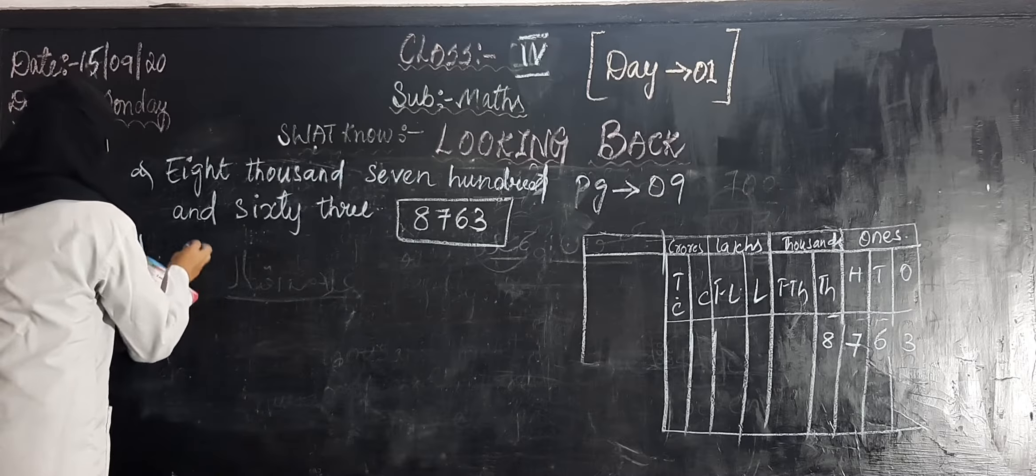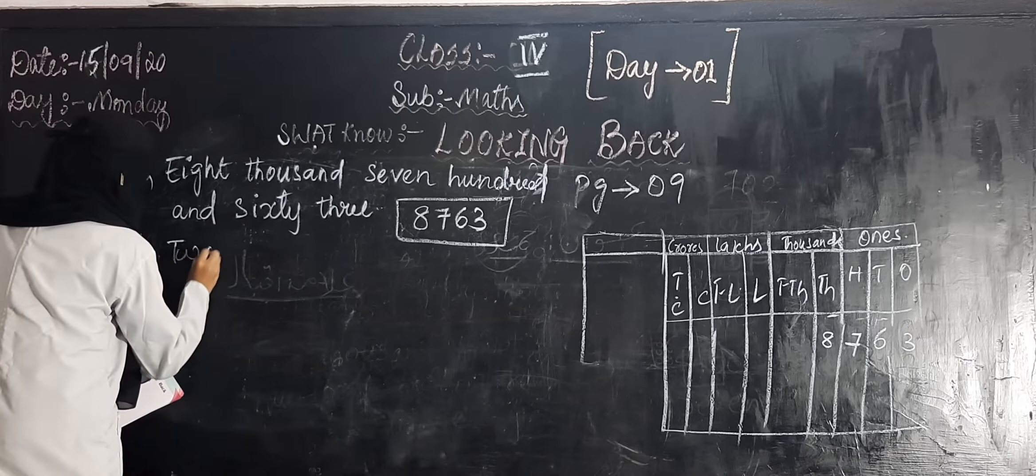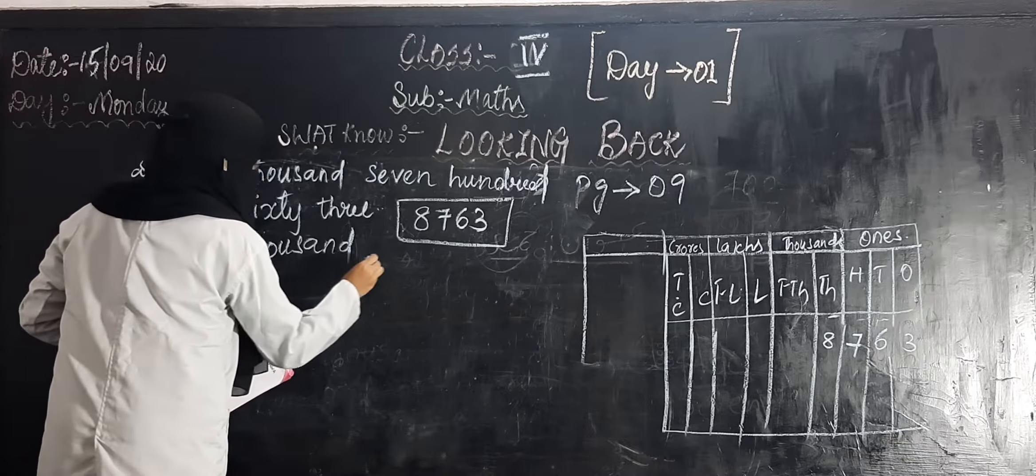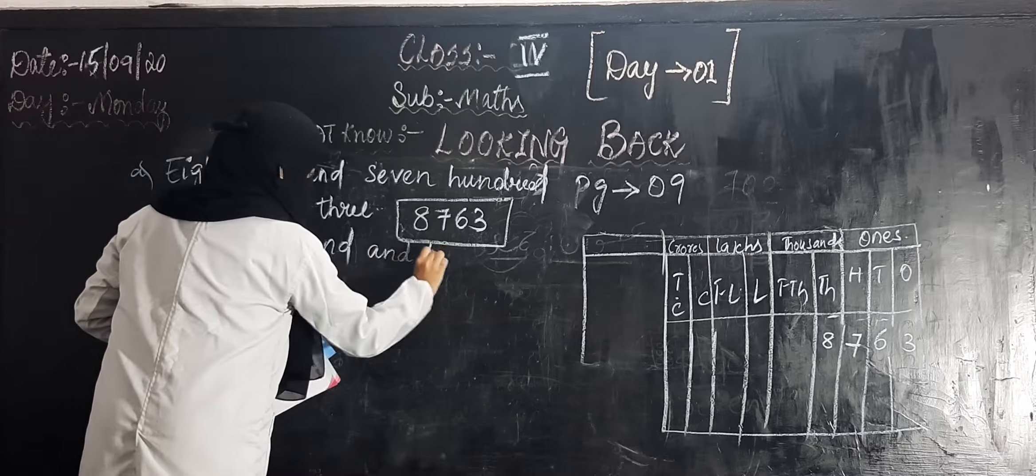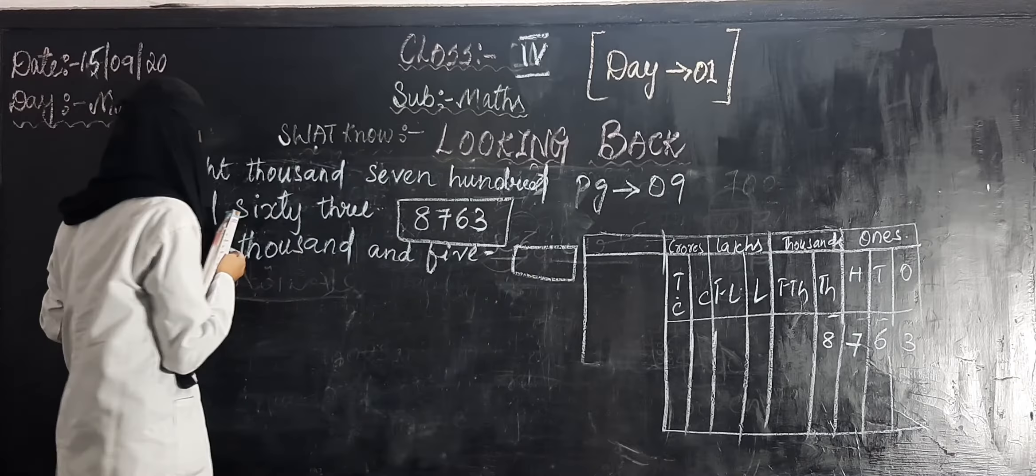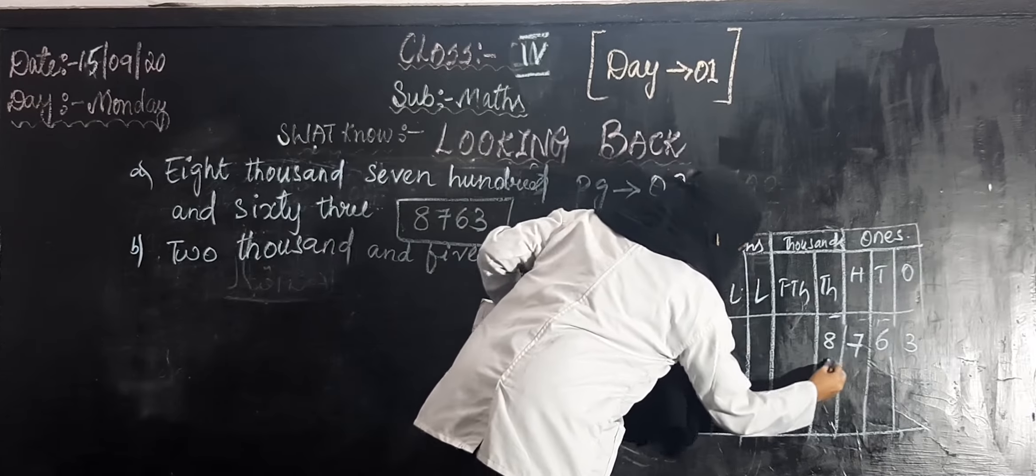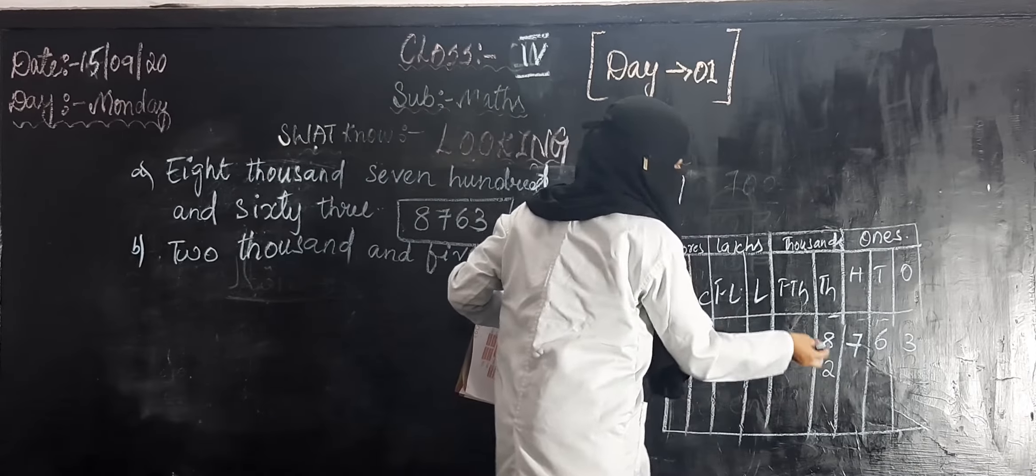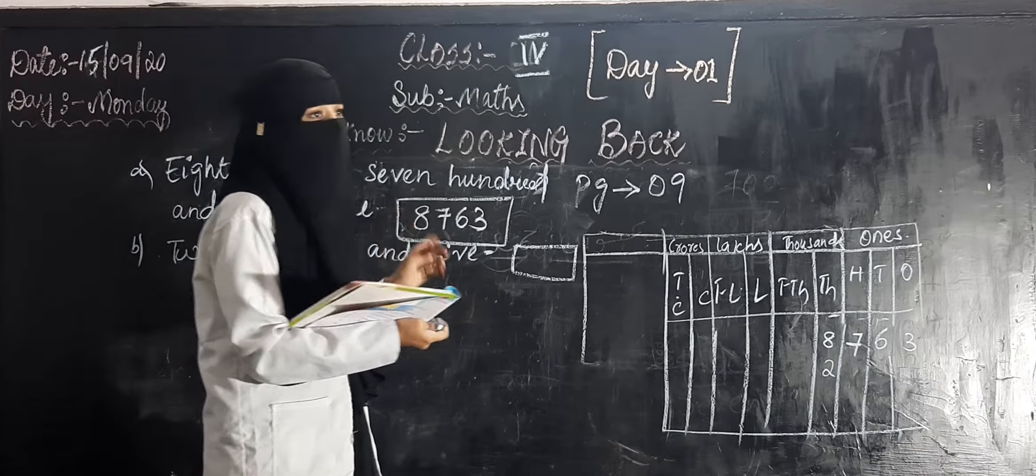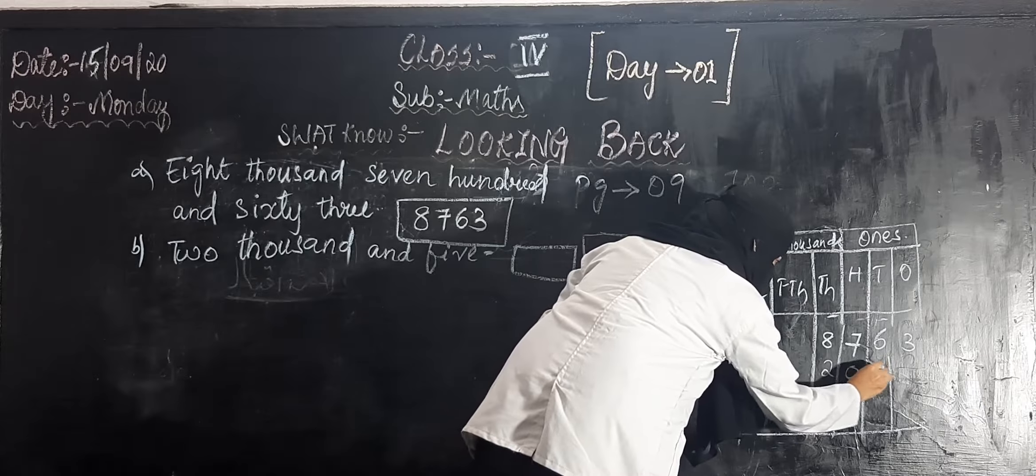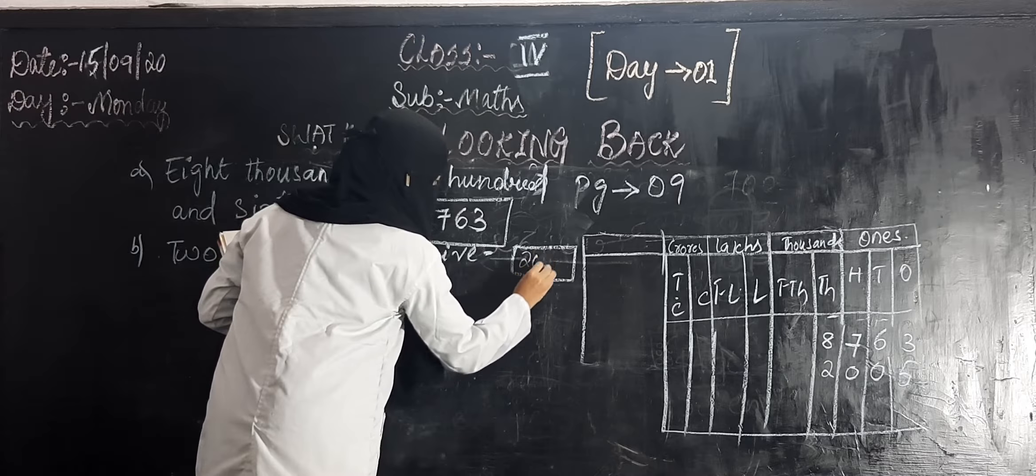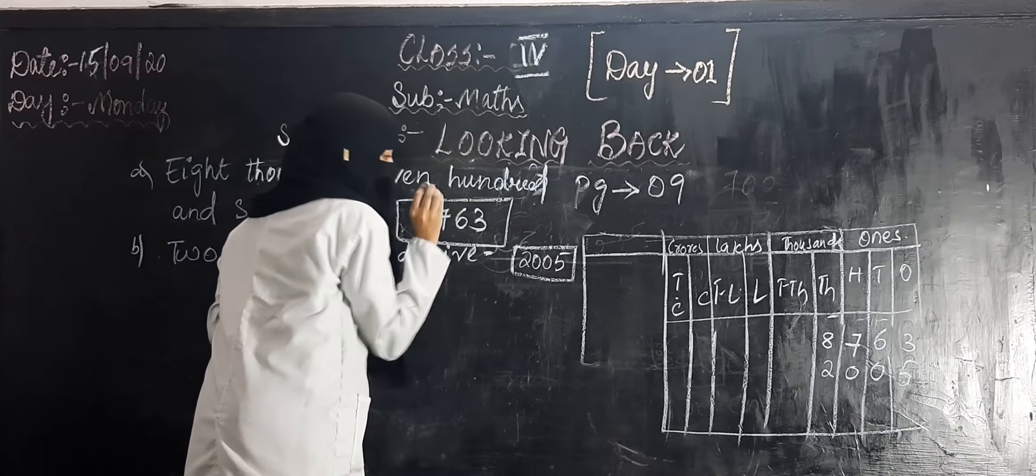Second question is two thousand five. Where is the place of two? Two thousand. There is no hundred, only five is on one place only. So, zero, zero, five. So, 2005. The figure is 2005.